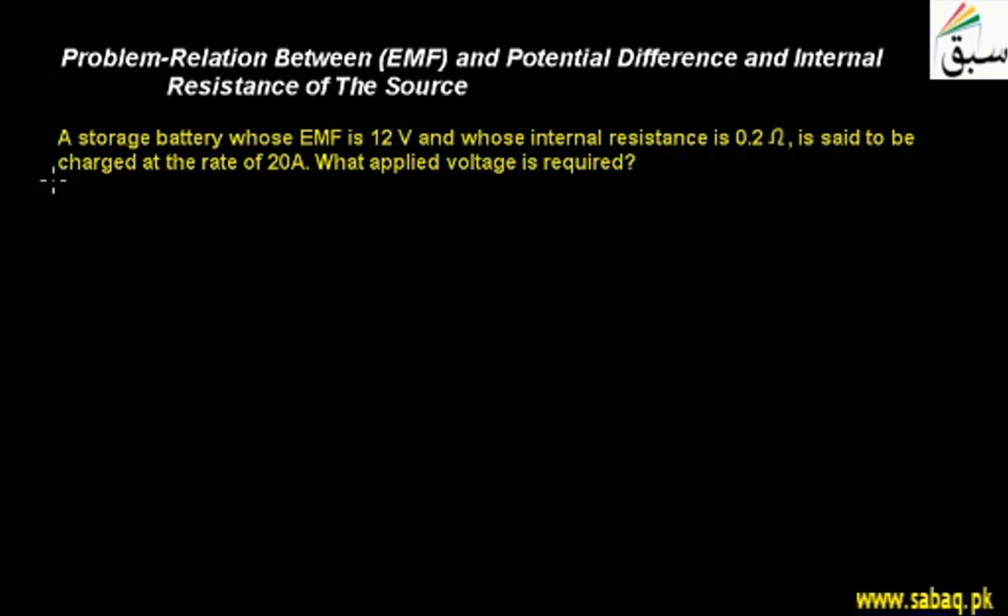What is the problem? A storage battery whose EMF is 12V and whose internal resistance is 0.2 ohm is said to be charged at the rate of 20 ampere. We have a chargeable battery which is being charged.